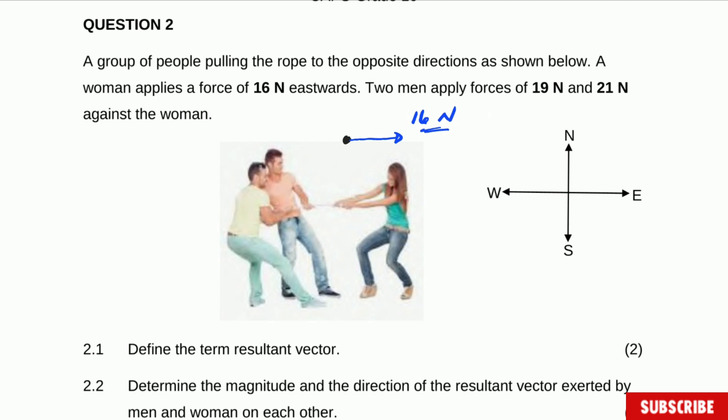So there are also two men pulling, one of them to the west as well as the other one. This one is 19 newton and there is another man pulling also to the west direction with 21 newton. This is actually what we have. There is a rope which is the dot point here and there is a person pulling to the east and there are two other persons pulling to the west.